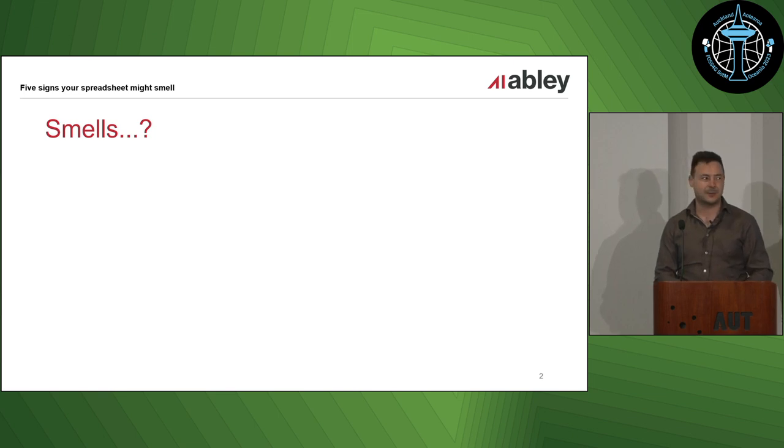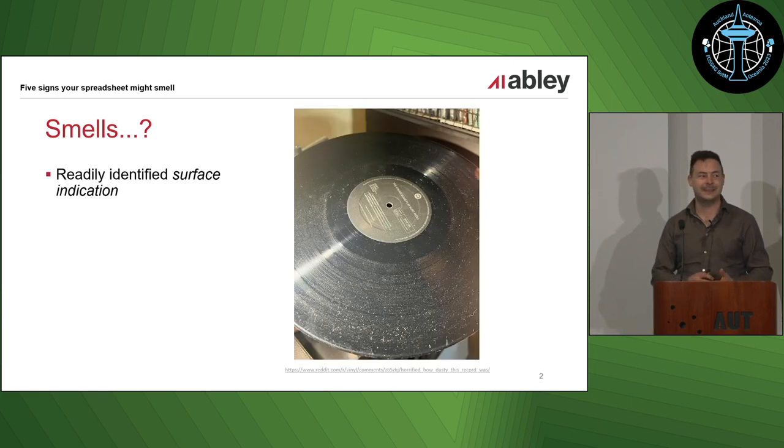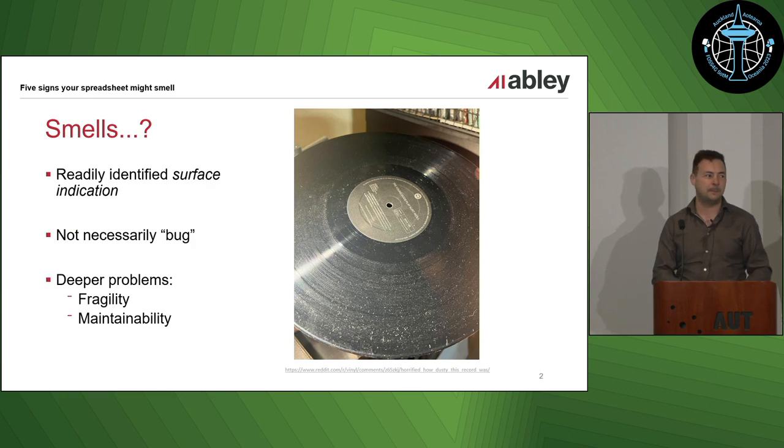First, you're probably wondering what on earth I'm on about smells. This is a term that I shamelessly stole from the world of software development where there's these things called code smells, and those are readily identified surface indications, like things you can spot easily that show something's wrong. It's not necessarily a bug, but it can indicate that there's deeper problems in a system, something could be fragile. And there's often not always an easy win. You're going to have to hunt around a little bit and figure out what you're actually trying to do.